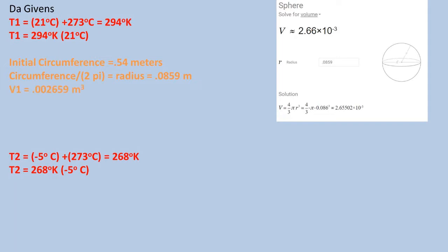Plugging that value into the volume formula of a sphere of four divided by three times pi times radius cubed, we get a volume of 0.002659 meters cubed for volume one.